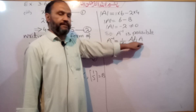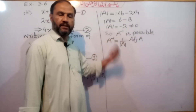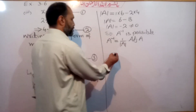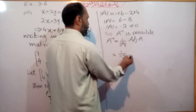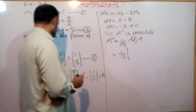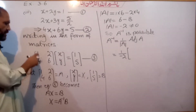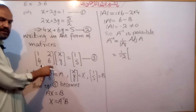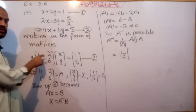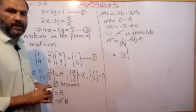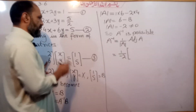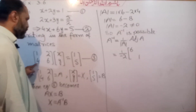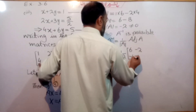So A inverse equals 1 over minus 2, into adjoint of A. To find the adjoint, we swap the principal diagonal elements — 6 goes to the top and 1 goes to the bottom — and change the sign of the secondary diagonal elements: minus 2 becomes minus 2, and 4 becomes minus 4. So adjoint of A = [[6, -2], [-4, 1]].